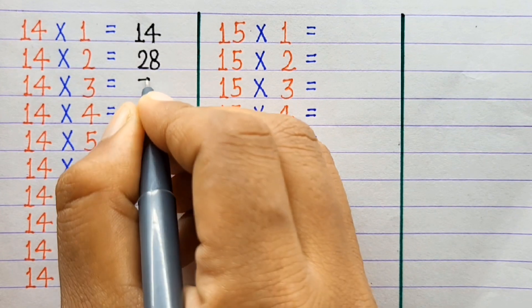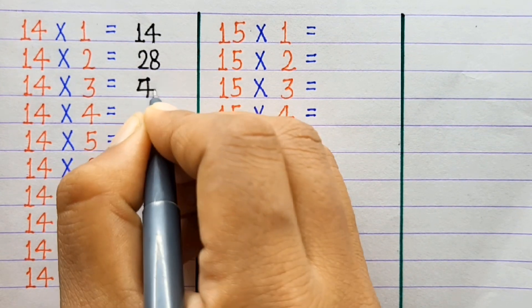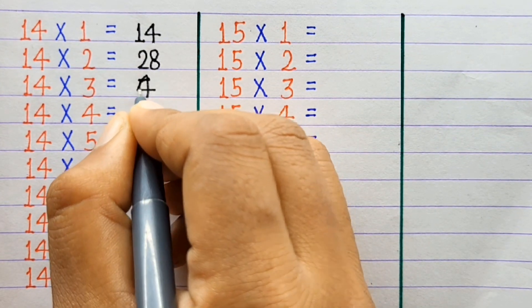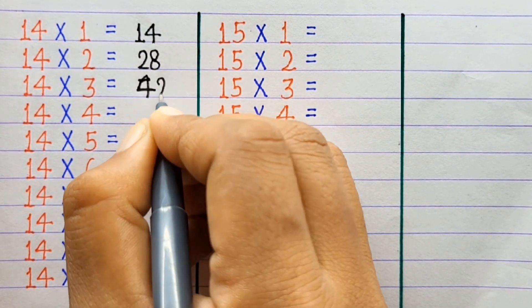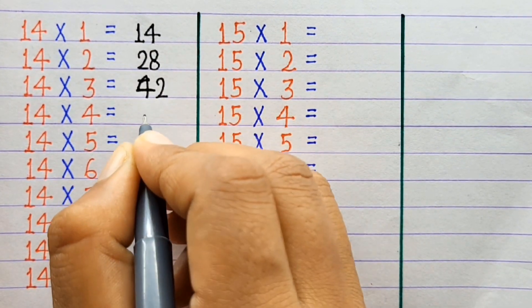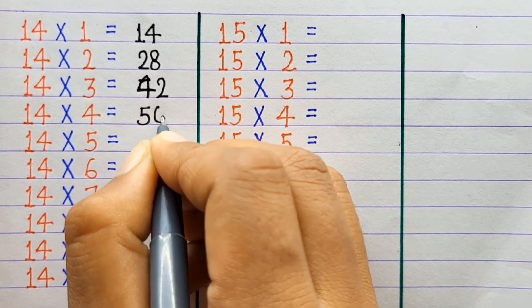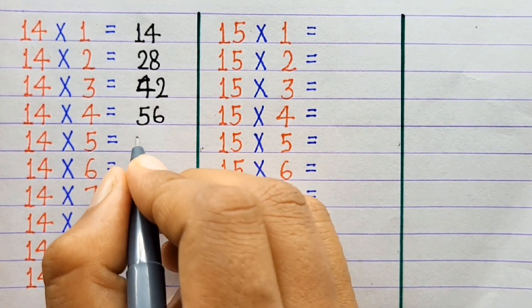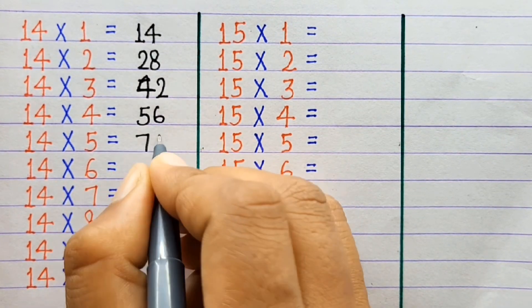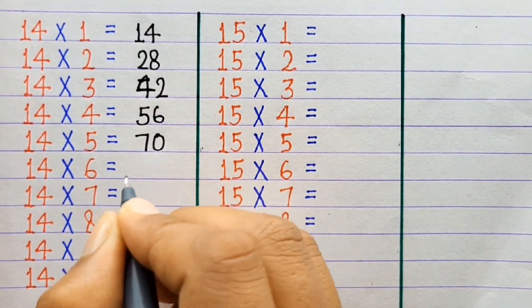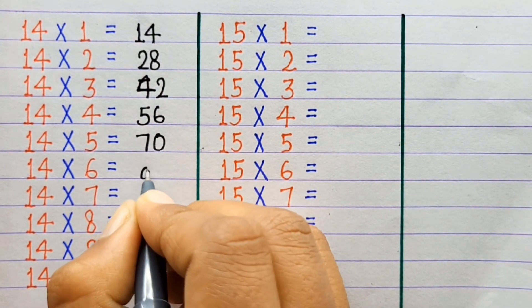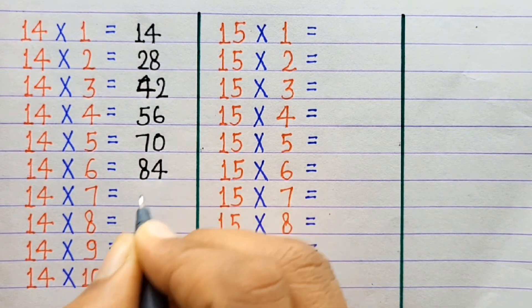13×9=117, 14×1=14, 14×2=28, 14×3=42, 14×4=56, 14×5=70.